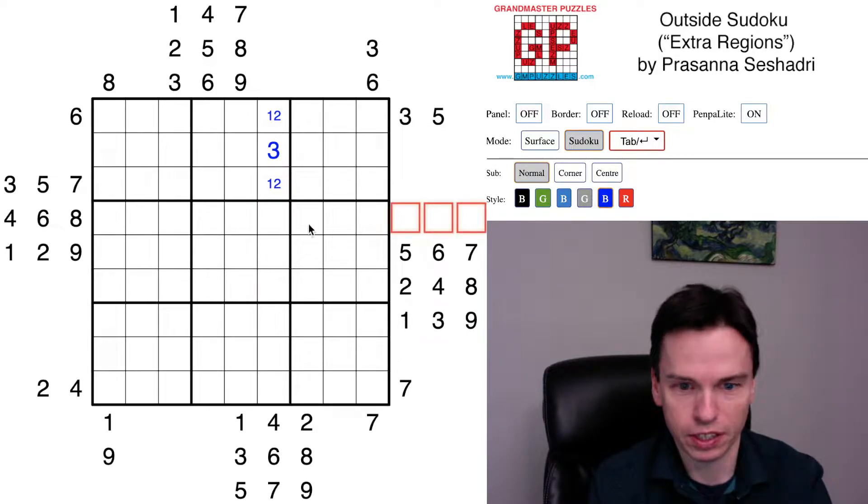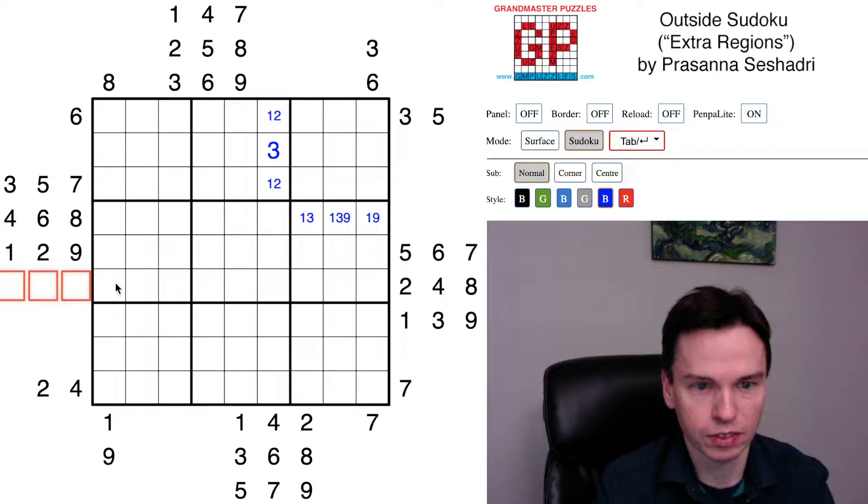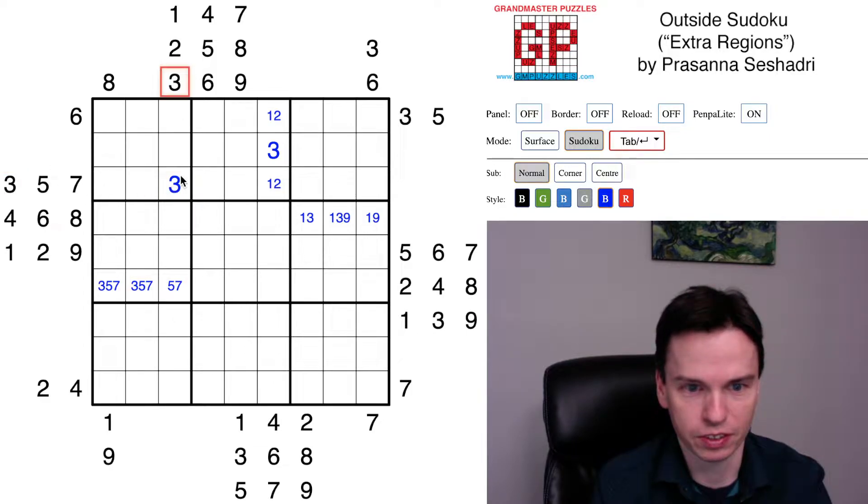This is gonna be 1, 3, 9 leftover. I got a 3 up above, got a 9 down below, and I'm gonna have a 1 in the remaining space. This is 3, 5, 7 leftover, got a 3 here and then 5, 7 in the remaining cells.